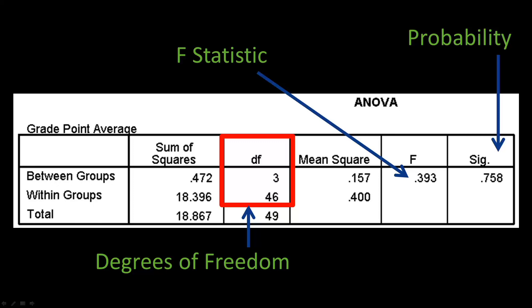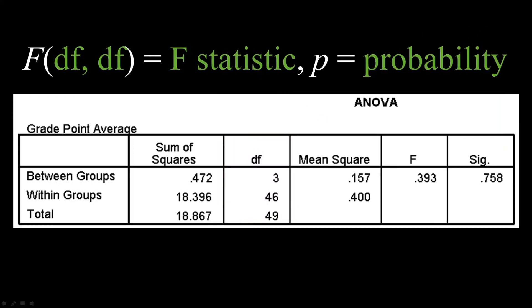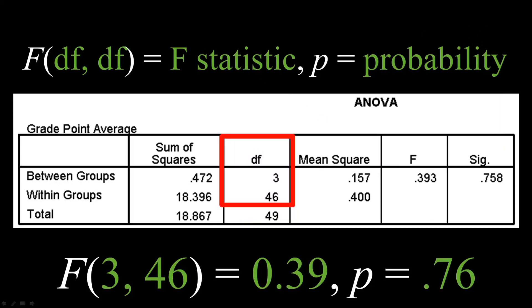To summarize these results in the text of your paper, use this format. Just insert the results from your output. Notice that the F is capitalized, and both F and P are in italics. The rest of the text is in regular typeface.